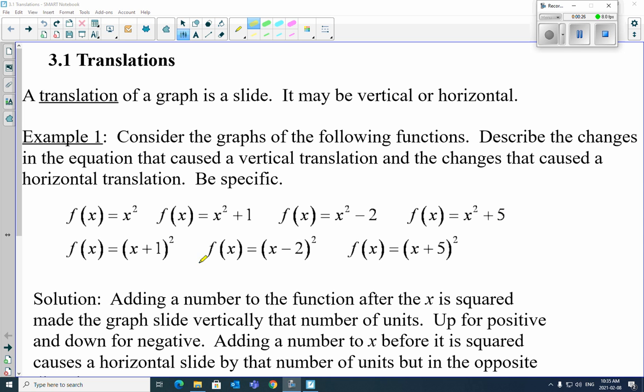Now, when it's inside the brackets, you've got to remember that it's the opposite. For instance, what number do we plug in to make this 0? Negative 1. So this is going to slide 1 to the left. x minus 2, we plug in a positive 2, it's going to shift it 2 to the right. And this one's going to shift it 5 to the left.